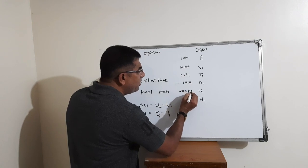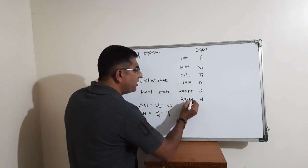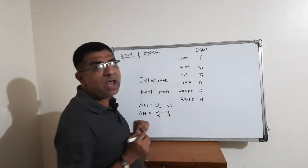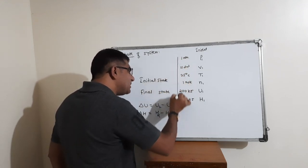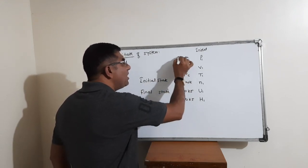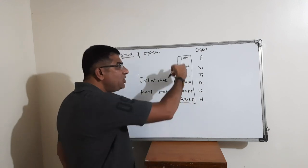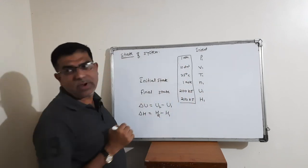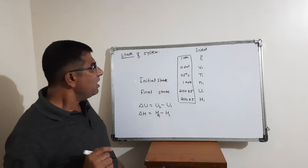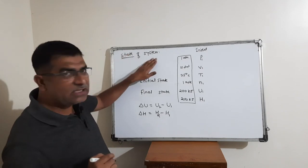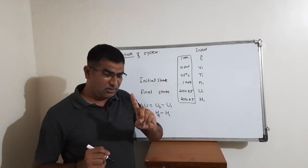For convenience, suppose we assign internal energy a value of 200 kilojoules and enthalpy also 200 kilojoules. These values represent the thermodynamic properties of the initial state. The state of a system refers to the given thermodynamic properties having a specific set of values.